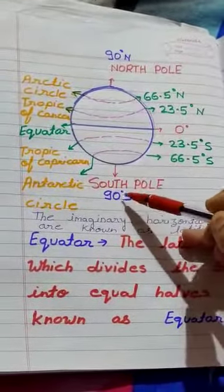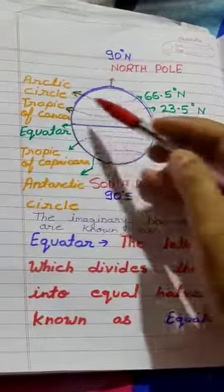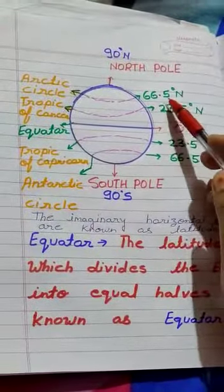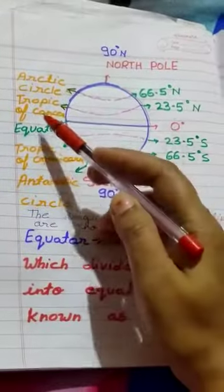This is the North Pole and second one is South Pole. Arctic Circle is situated at 66.5 degrees north and Tropic of Cancer is situated at 23.5 degrees north.